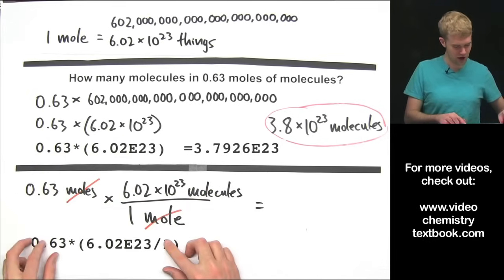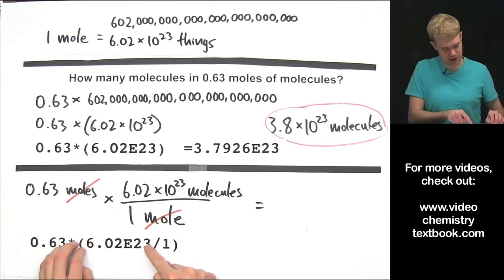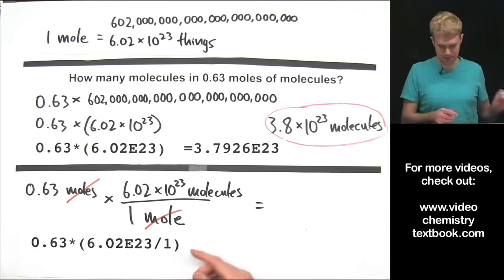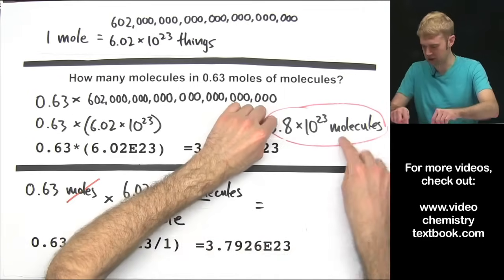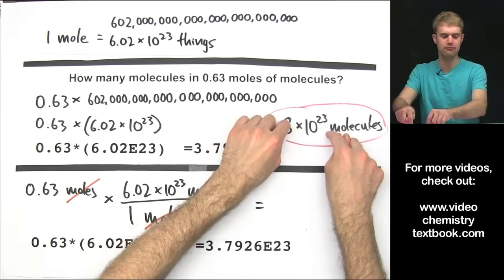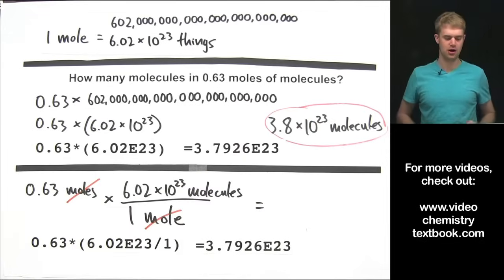But again if you want to type this in with a whole fraction, 0.63 times 6.02 times 10 to the 23rd divided by 1, you can do that. The answer is exactly the same and when we round it using significant figures we get this number of molecules is in 0.63 moles of molecules.